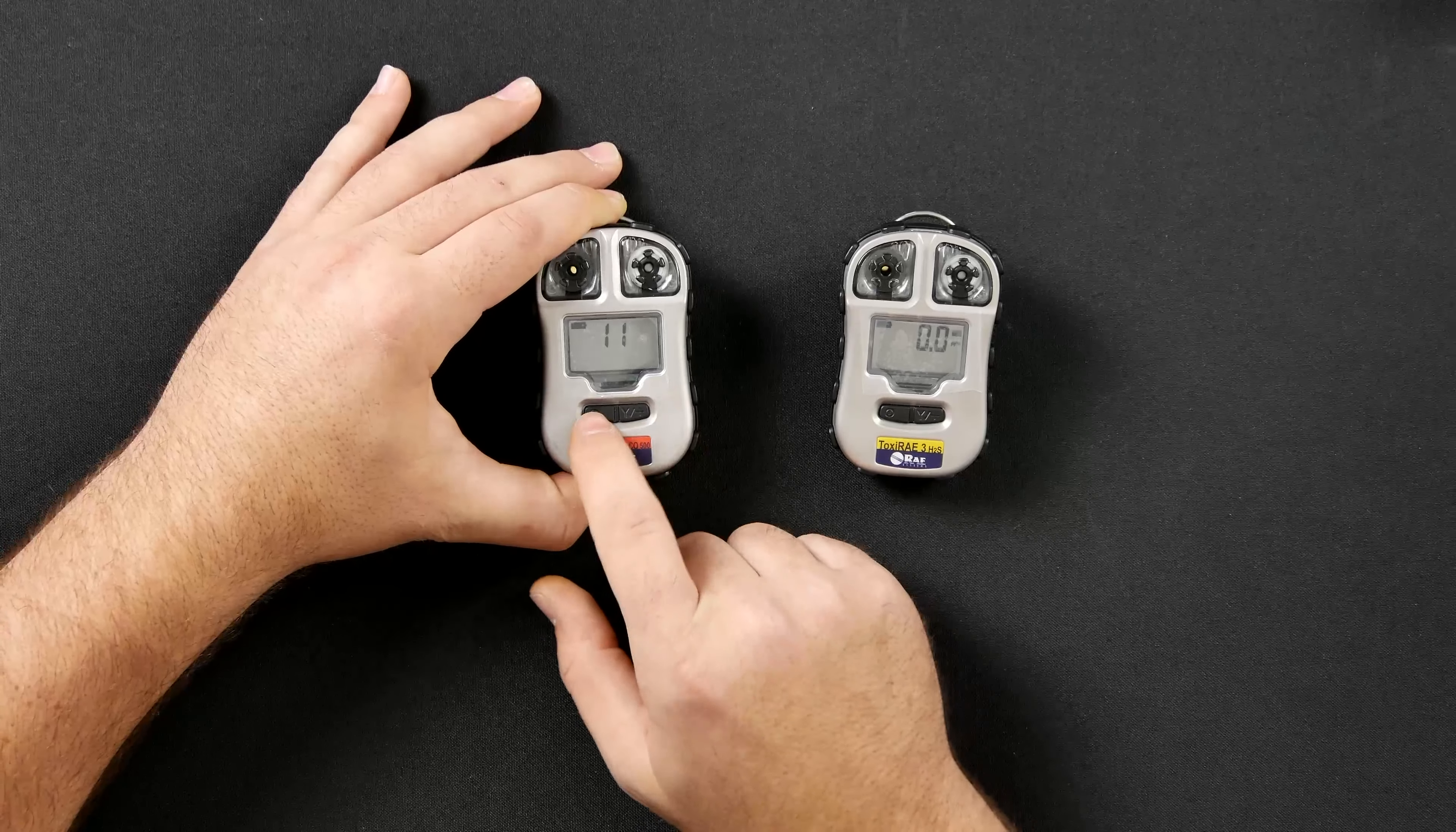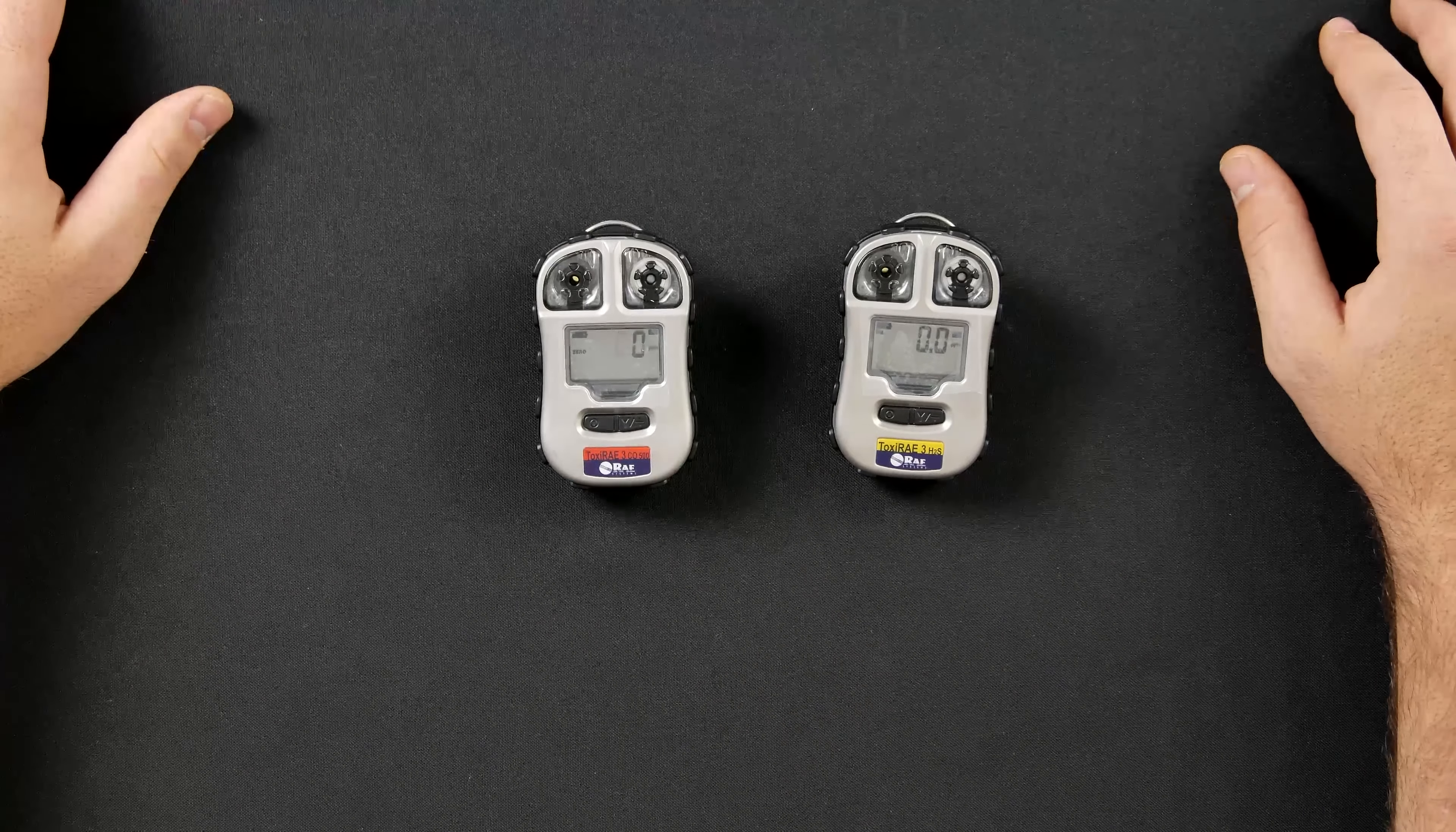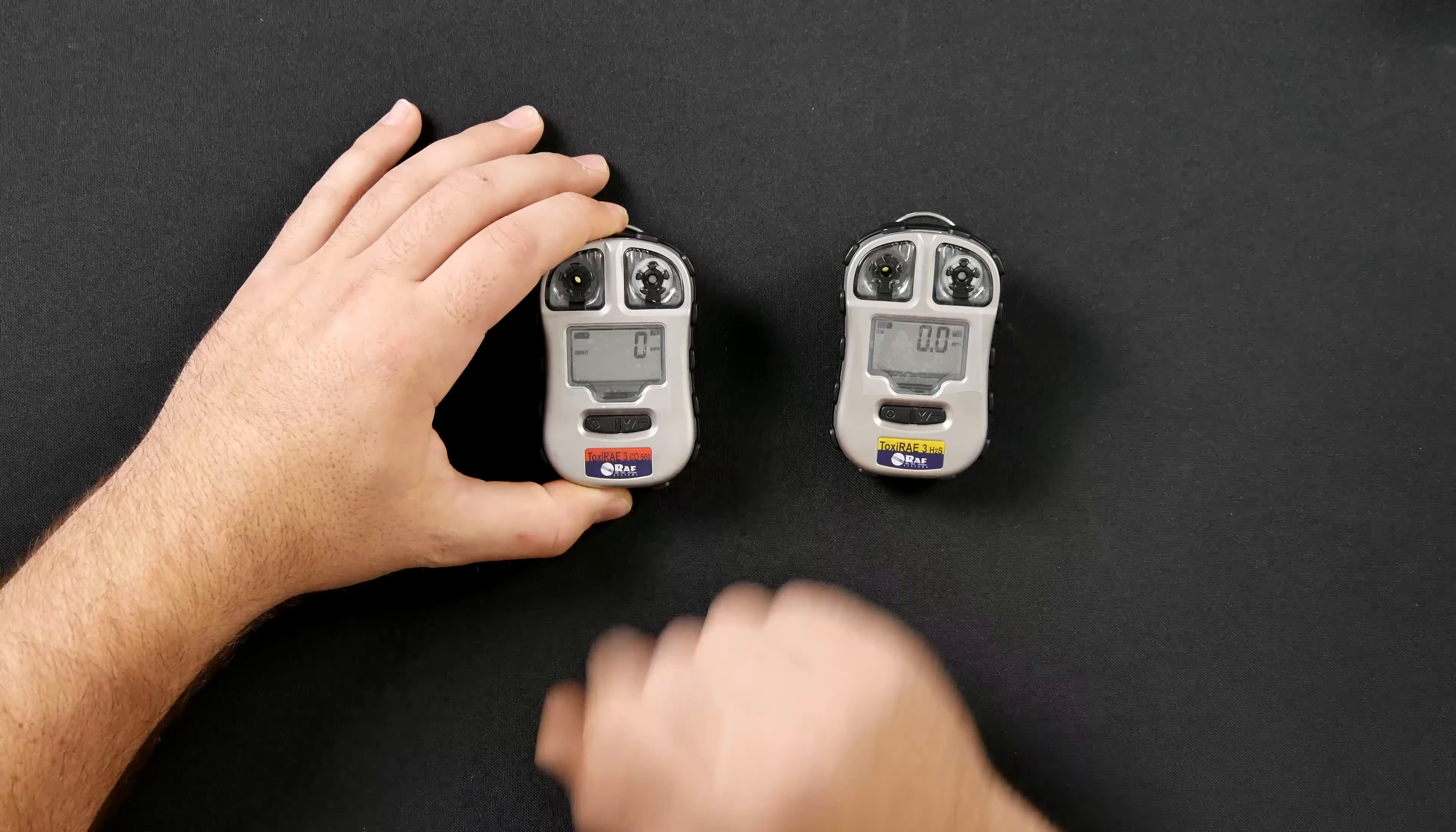After this is inputted, you will have to hold down the mode button. It will then come to your zero calibration. You will start it by hitting the Y plus button. After its 15-second fresh air calibration, it will show you what it calibrated to and that it is finished.